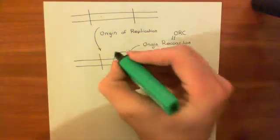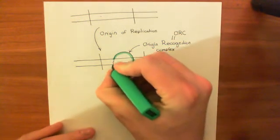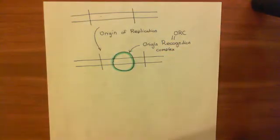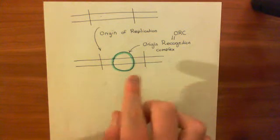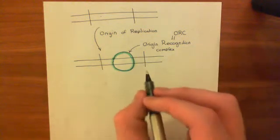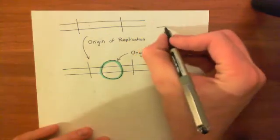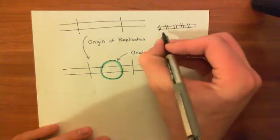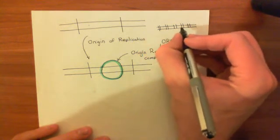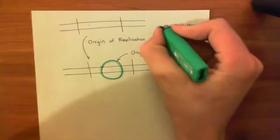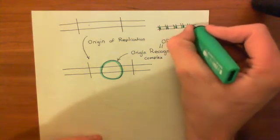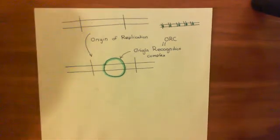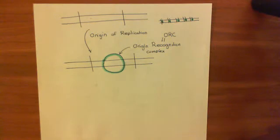The first thing which binds to this origin of replication - shown here as a flow diagram - is a big protein known as the origin recognition complex. This has the acronym ORC. The origin recognition complex, or ORC, is not just one protein - it's a complex, a big mass of many different proteins all working together to bind to this origin of replication. This is happening at every single origin of replication along the chromosome - you're going to get an origin recognition complex binding to every single one.